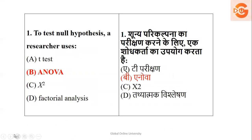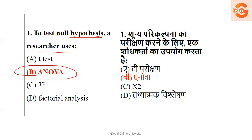Let's start with the first topic: to test a null hypothesis, which test does a researcher use — is it the t-test, ANOVA, chi-square, or factorial analysis? The answer is ANOVA. Remember, if you need to test the null hypothesis, the researcher uses ANOVA. These research questions are factual and can be twisted in any pattern.